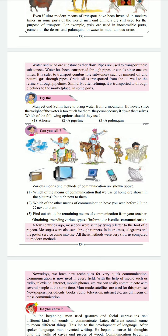Obtaining or sending various types of information is called communication. A few centuries ago, messages were sent by tying a letter into the foot of the pigeon. Messages were also sent through runners. In later times, telegrams and the postal service came into use. All these methods were very slow as compared to modern methods.